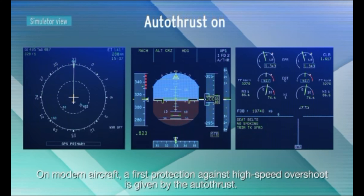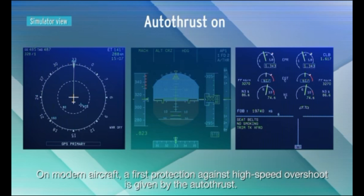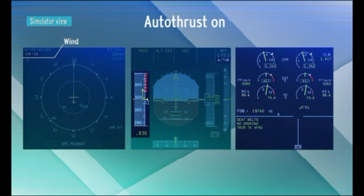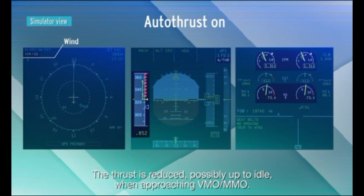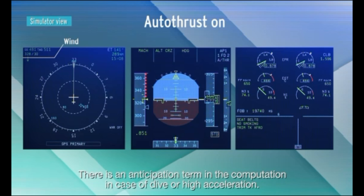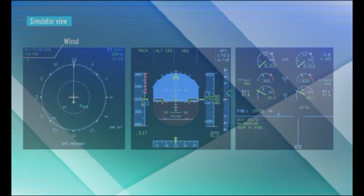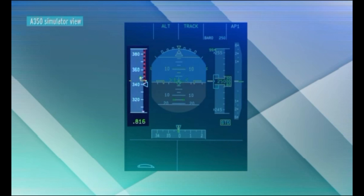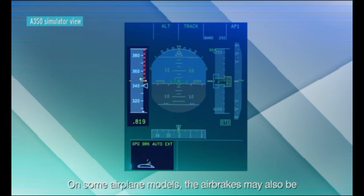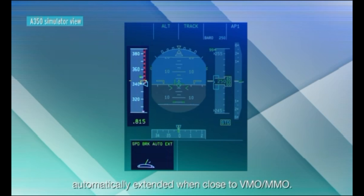This is why the tuning must reduce the probability of activation with strong gusts. On modern aircraft, a first protection against high-speed overshoot is given by the autothrust. The thrust is reduced, possibly up to idle, when approaching VMO/MMO. There is an anticipation term in the computation in case of dive or high acceleration. On some airplane models, the airbrakes may also be automatically extended when close to VMO/MMO.